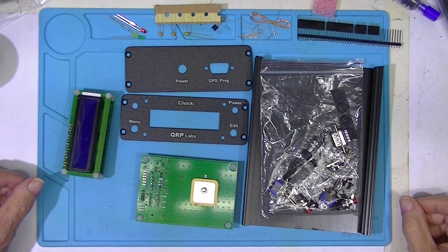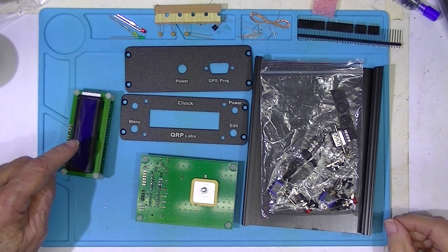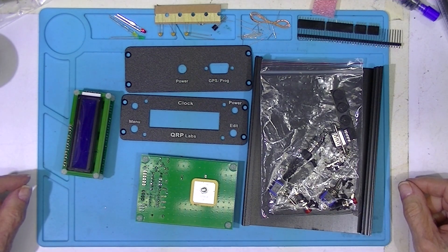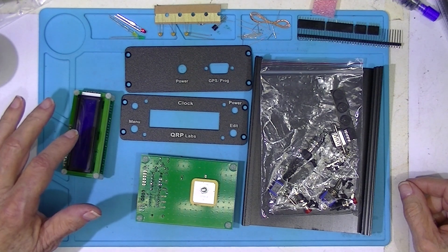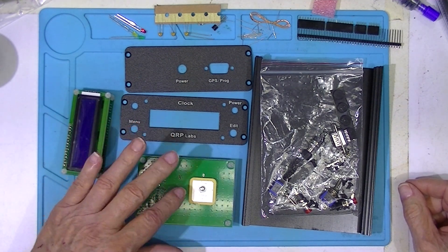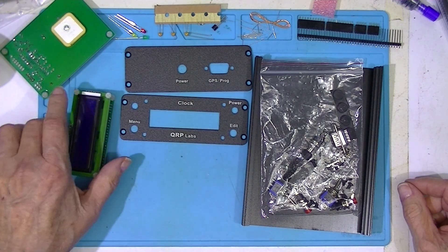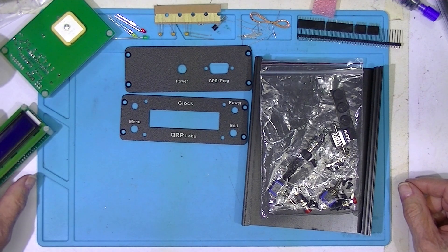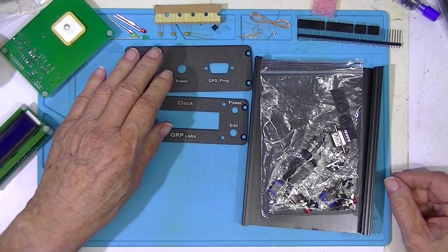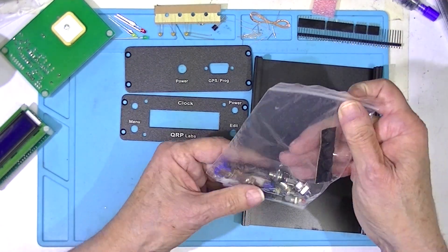This video will be part three of this little clock GPS kit assembly. So far in video one we did the clock, video two the GPS receiver, and now we're going to do the work required to mount the front and rear panels.